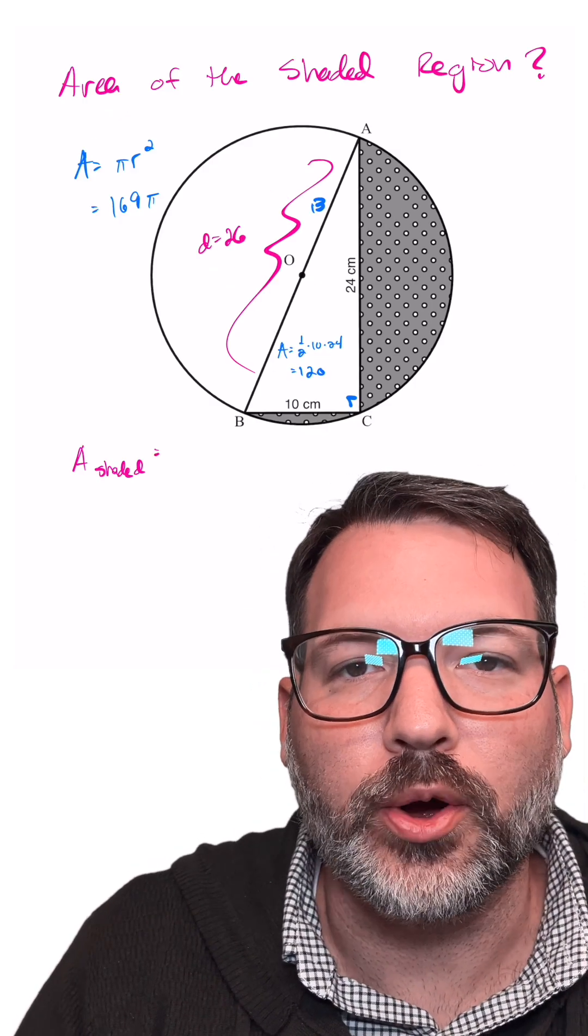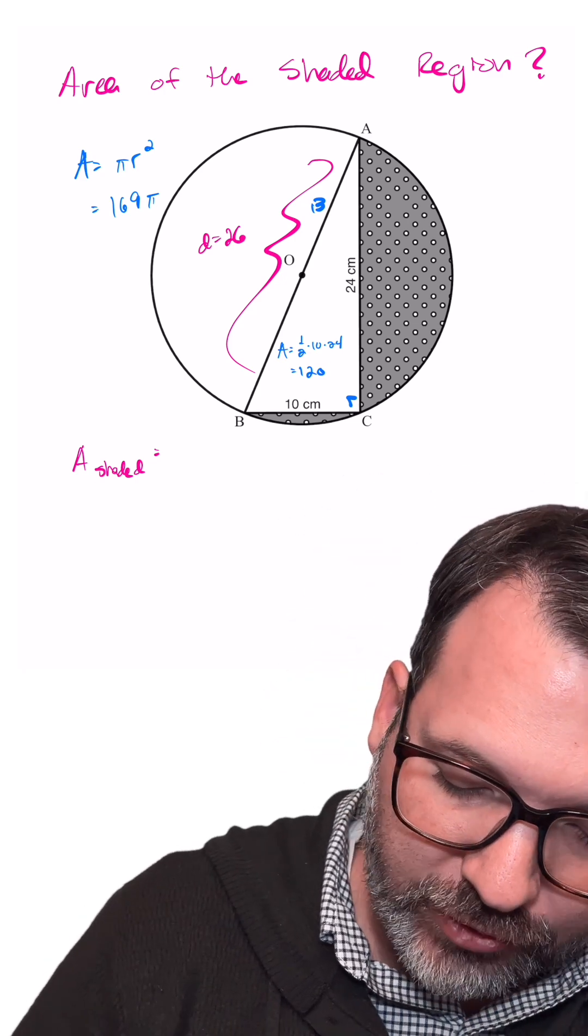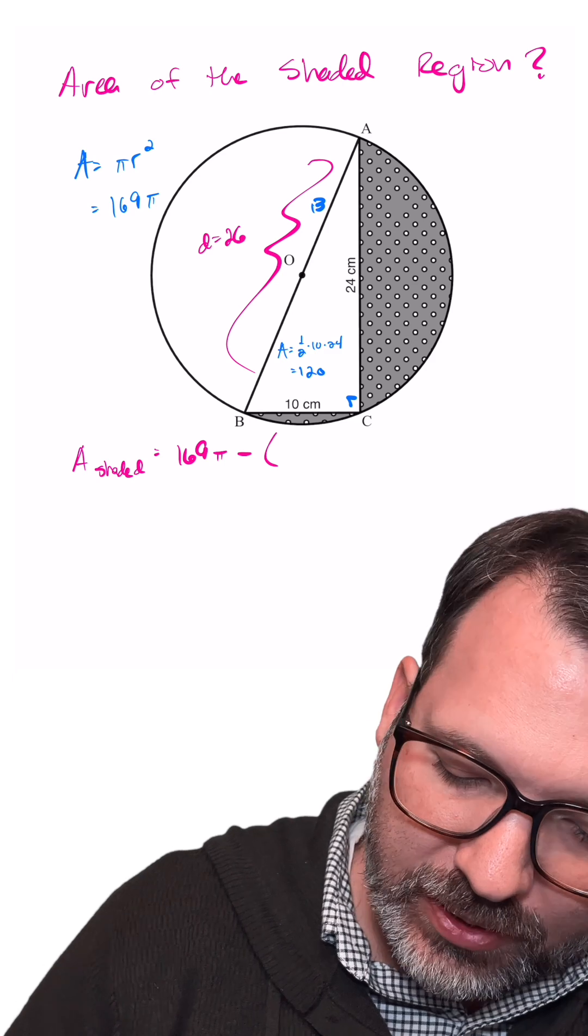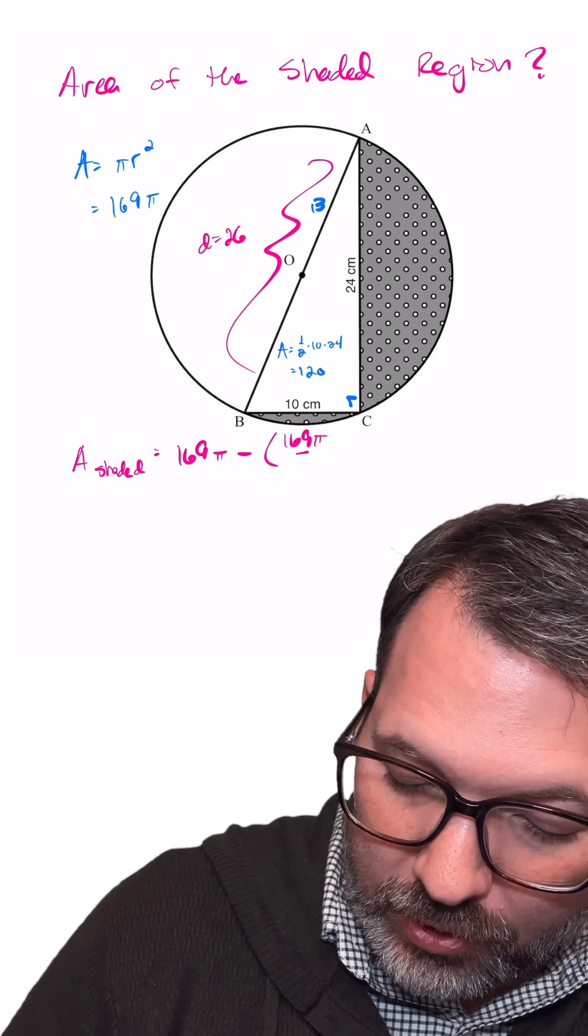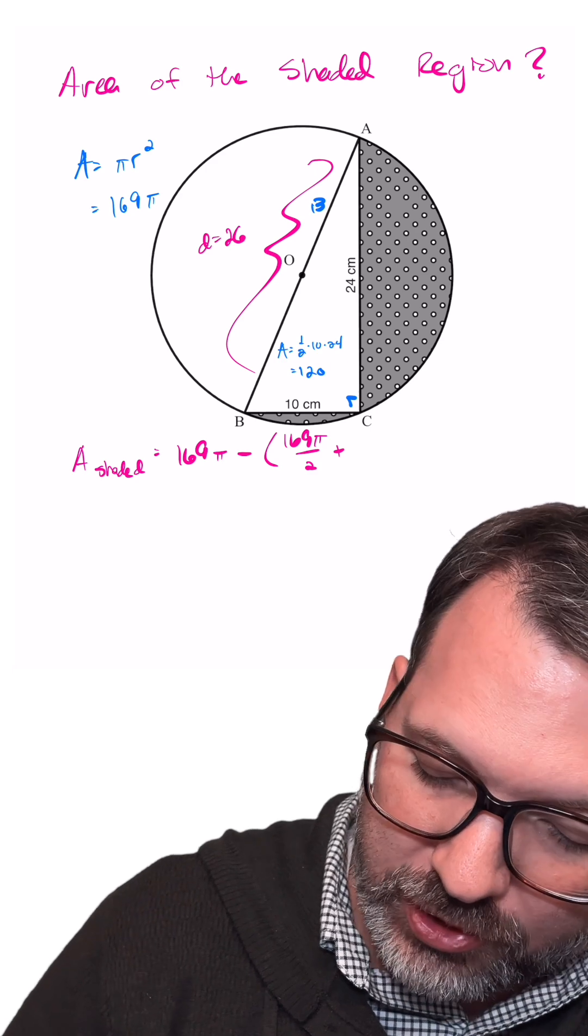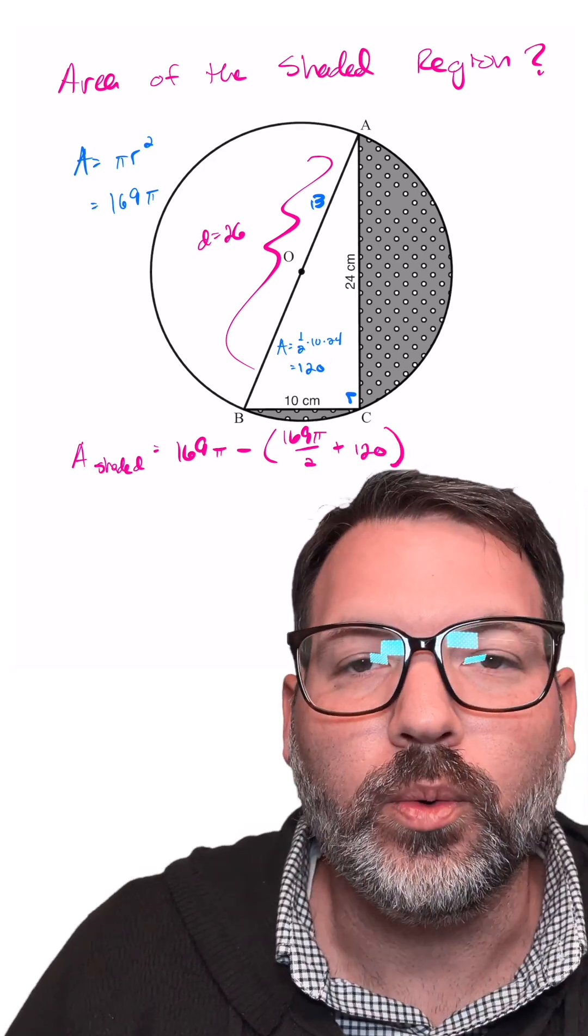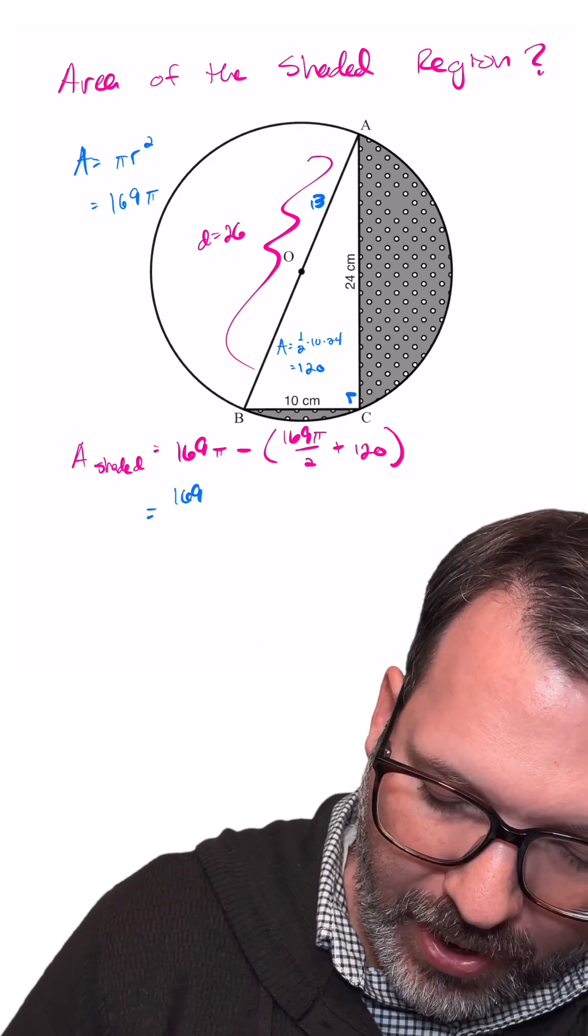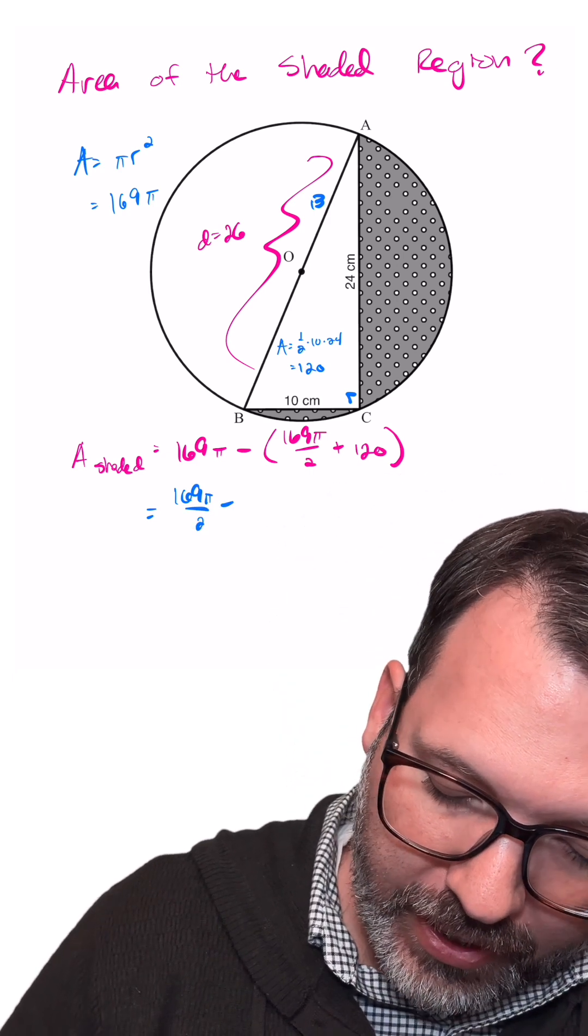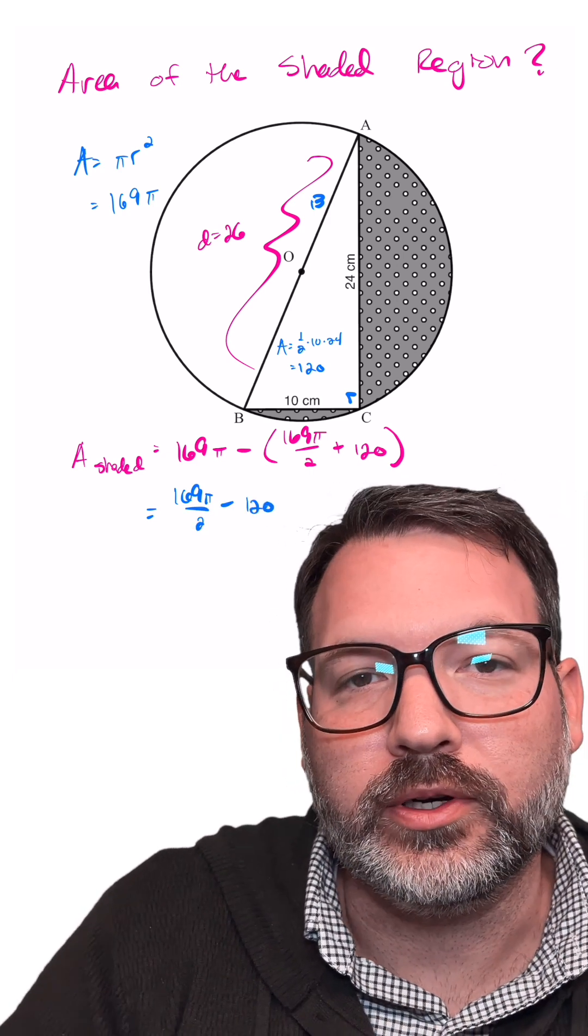Again, the area we're interested in is going to be whatever's left over after we take that total area, 169 pi, and subtract away the semicircle, so that would be half of 169 pi, plus the area of that triangle, which again we figured out was 120. 169 pi minus half of itself leaves the other half, 169 pi minus the area of 120.